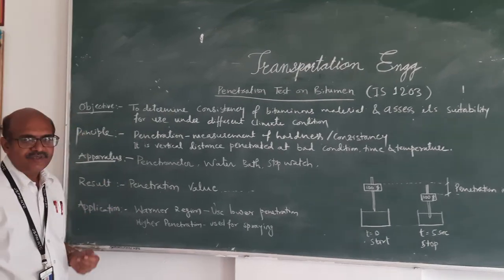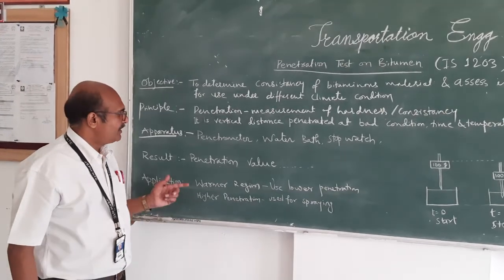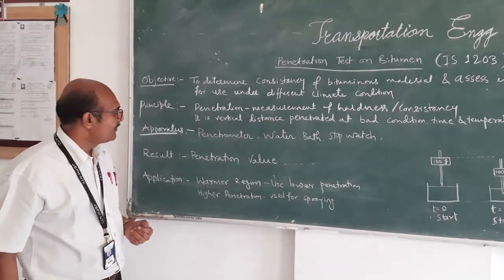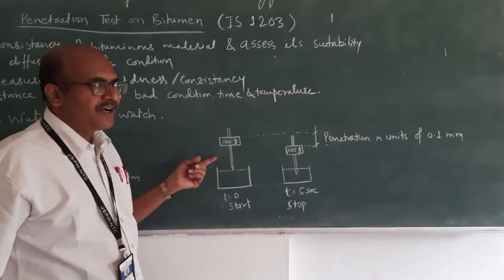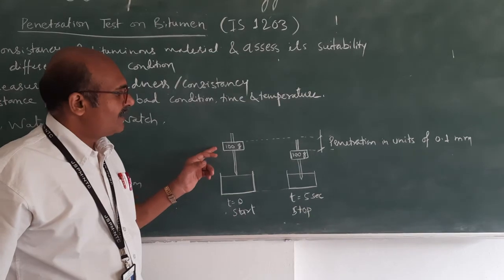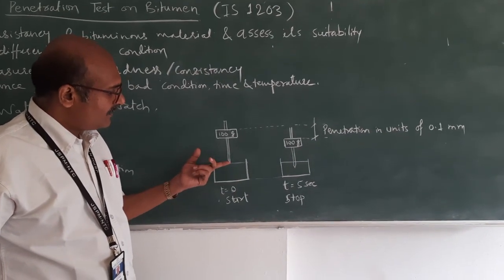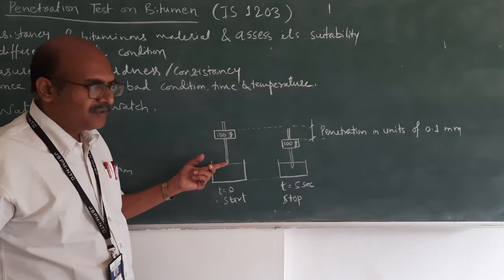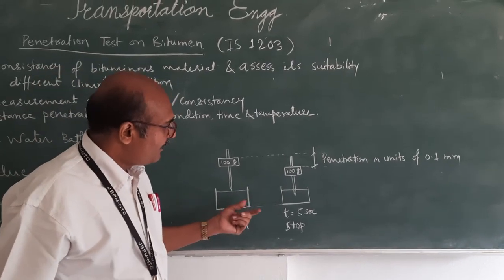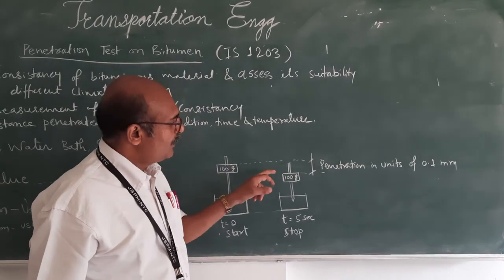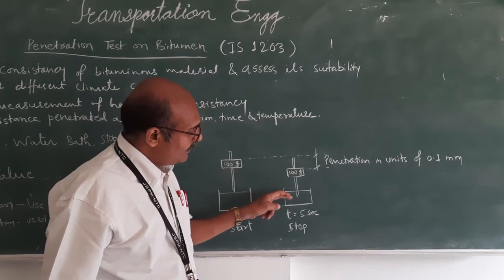The apparatus required for the test includes the penetrometer, a water bath, a stopwatch, and so on. The assembly required for the penetrometer includes a standard needle as specified by the IS code. A 100-gram weight is attached above the needle. We place the bitumen specimen below, and at the start we keep the point of the needle just touching the surface of the bitumen. We then start the test, and after five seconds we stop, because within those five seconds the needle, due to the weight attached above it, penetrates into the bitumen.